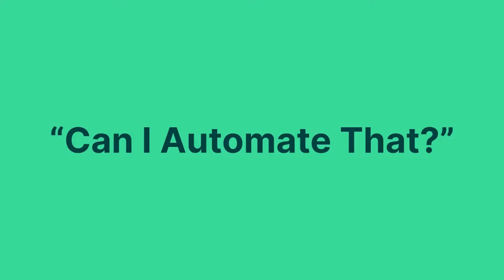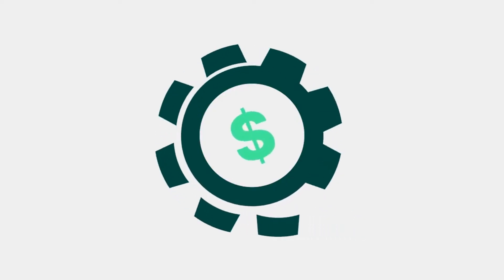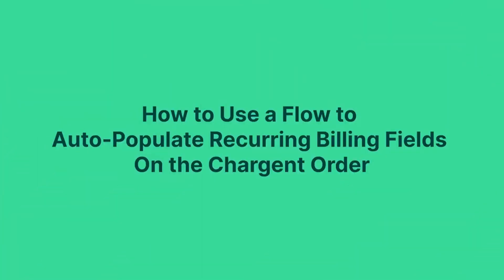Did you know that one of the most common questions we get in tech support is: can I automate that? More often than not, the answer is yes. Chargent is native to Salesforce, allowing the use of Salesforce's powerful automation tools like Flow, which are flexible enough to meet most use cases. Automation is a great way to reduce human errors and free up your staff to click less and focus more on strategic activities that grow your business. In this video, we're going to demonstrate how to use a flow to auto-populate recurring billing fields on the Chargent order. My name is Randy, and I'm from Chargent.